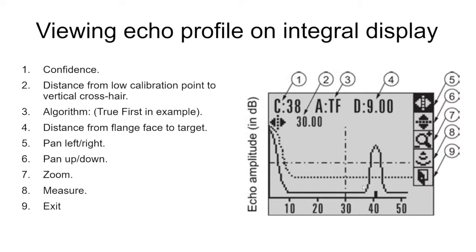Now that we've pulled up an echo profile on the screen, what does this all mean? Looking at the upper left hand corner, the number C:38 shows us the confidence is 38.